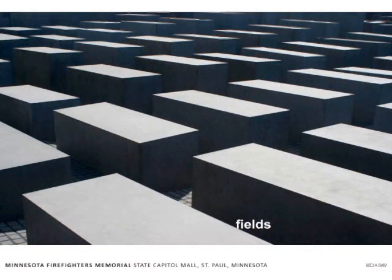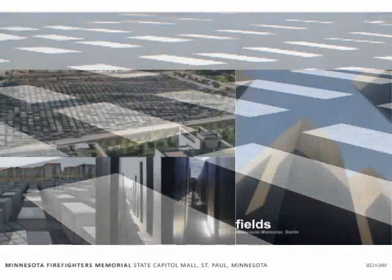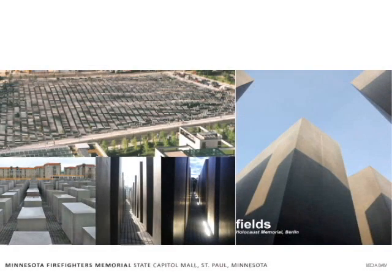First of all is fields, and as you see here from the slide, fairly self-explanatory. The example shown here is the Holocaust Memorial in Berlin. In the upper left you'll see the large area of fields that's approximately three acres. In the bottom left, you'll see those field slabs. As you walk through them, you get the feeling of foreboding, something like it must have felt to be in a concentration camp during World War II and the Holocaust.